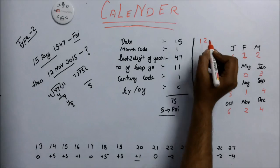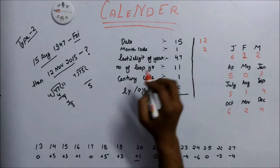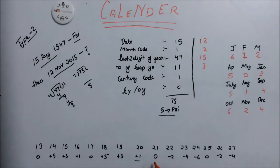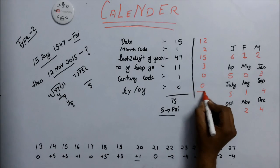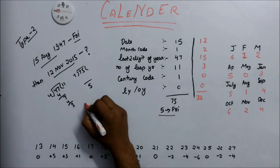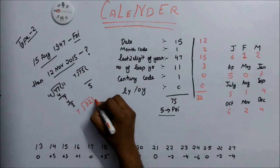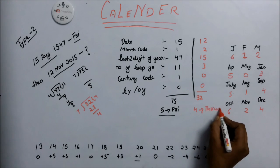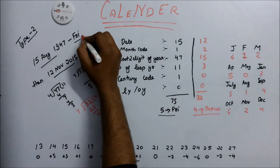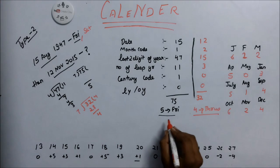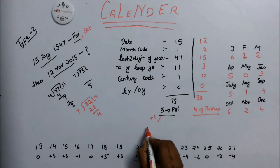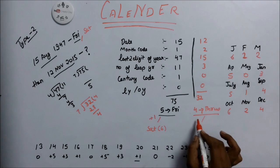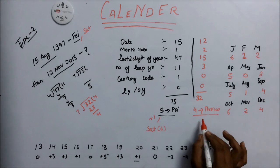Now we apply the same method for 12th November 2015. Date is 12. Month code for November is 2. Last two digits are 15. Number of leap years is 3. Century code for the 21st century is 0. It is not a leap year, so again 0. Adding gives 32. Dividing 32 by 7 gives remainder 4. Since 4 indicates Thursday, the answer is Thursday. But if Saturday were given as the reference day, we would add 1 to adjust, giving us Saturday as 6, and then Friday as 4 again.